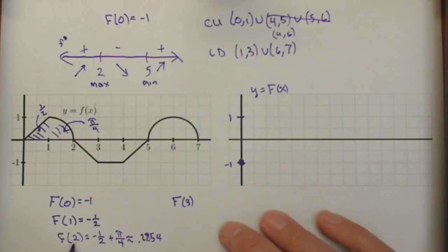f of 3. Well, let's see. We need to know how much we moved from 2 to 3. Now we've got a negative rate of change. That means we're going backwards. It's a triangle with an area of negative 1 half. So I'm going from this point, I'm moving backwards 1 half. So I'm taking this and subtracting a half. So minus 1 plus pi over 4.